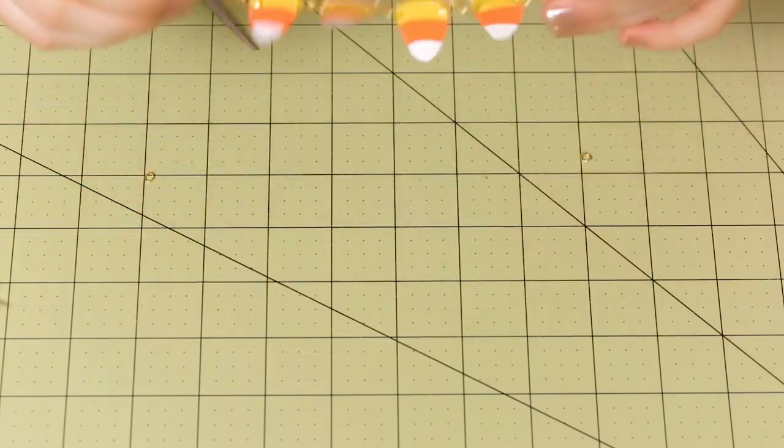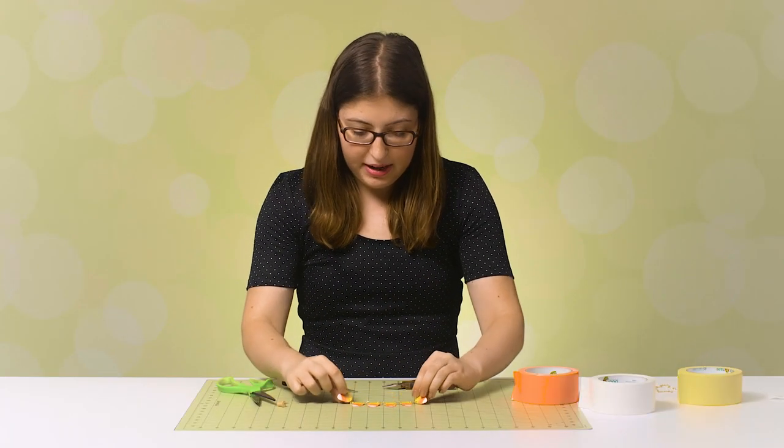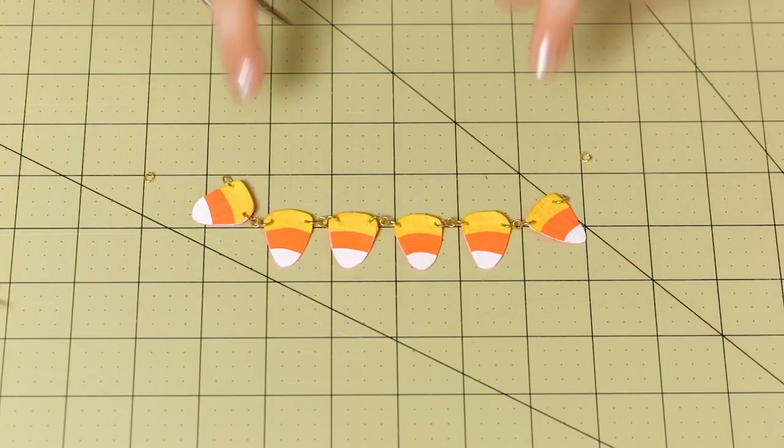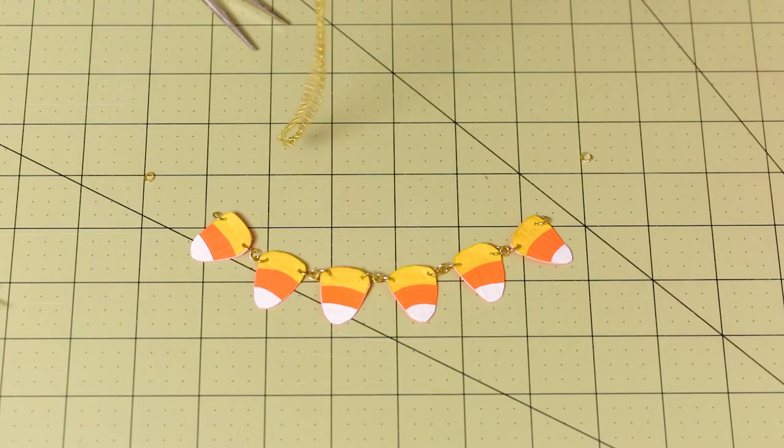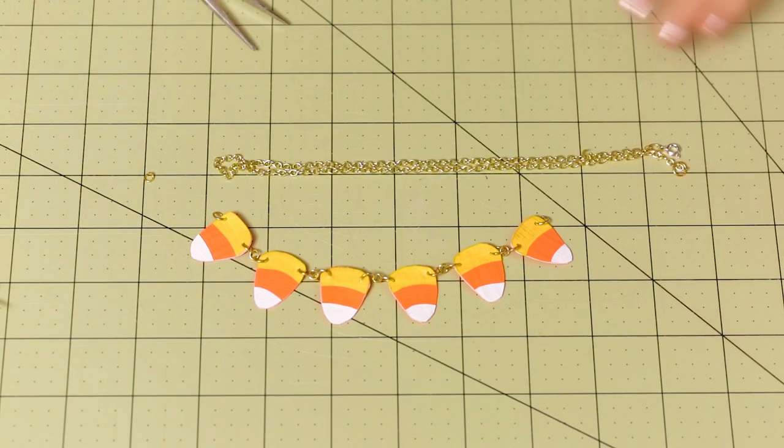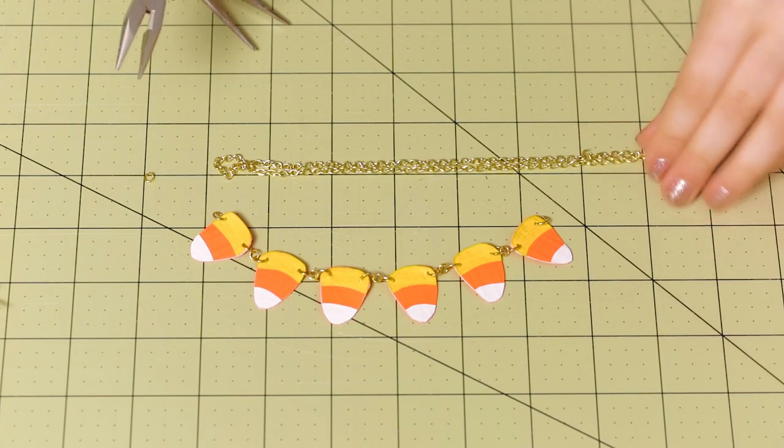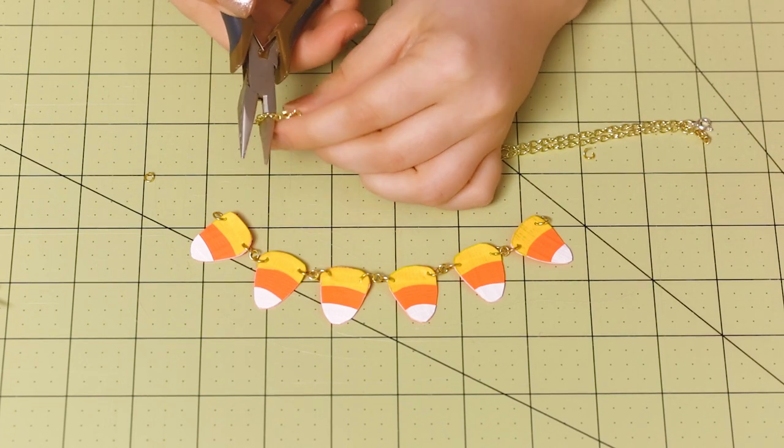All right. Now that all of our charms are attached with jump rings, we're going to attach a necklace. So we're going to fold that in half and then use the wire cutters that are a part of our jewelry pliers to cut the chain in half.